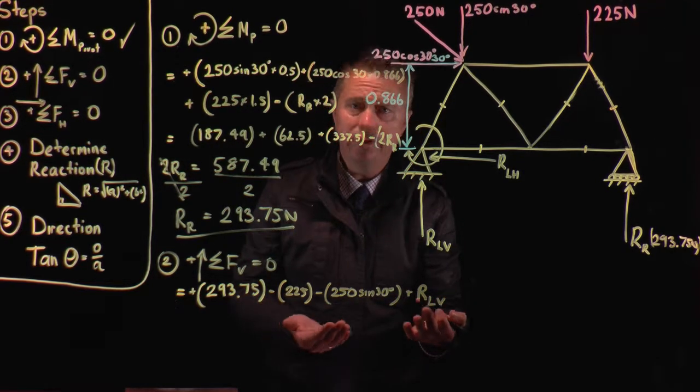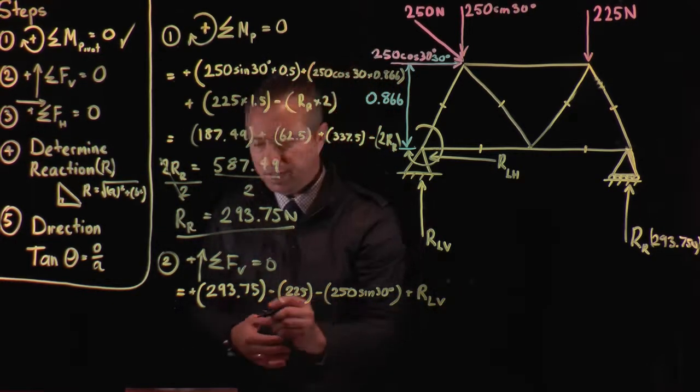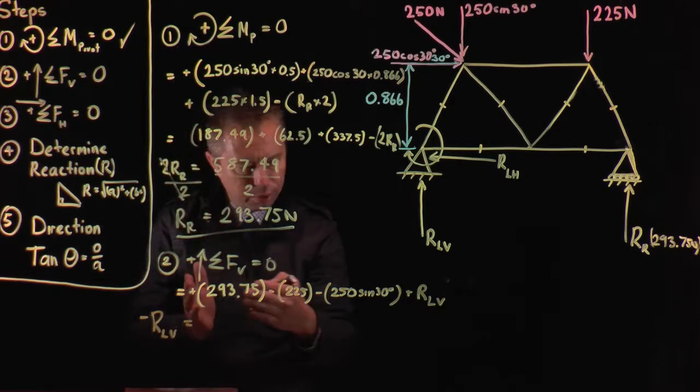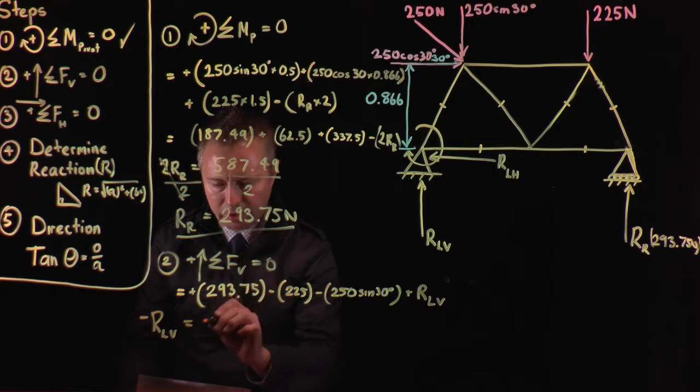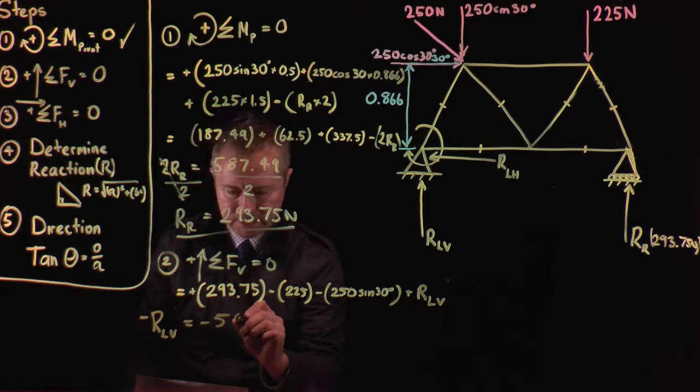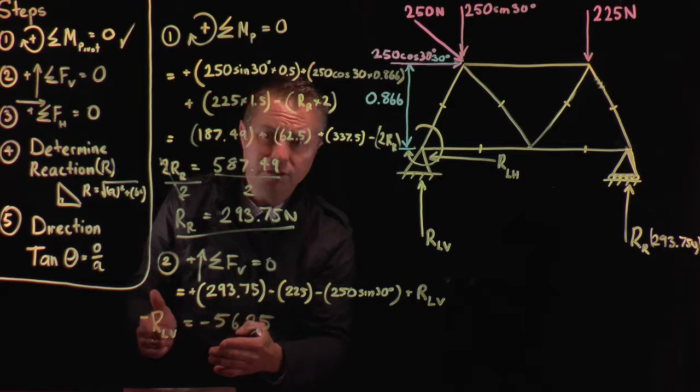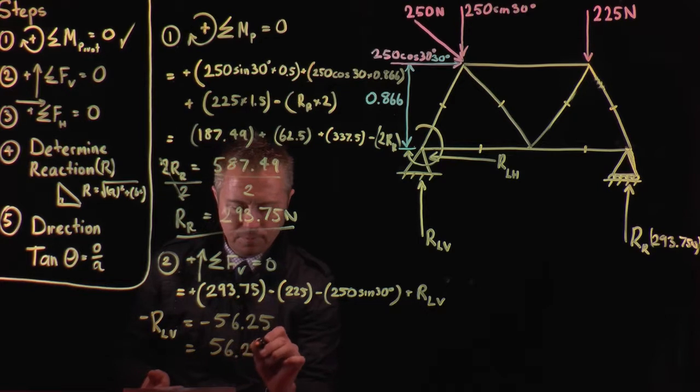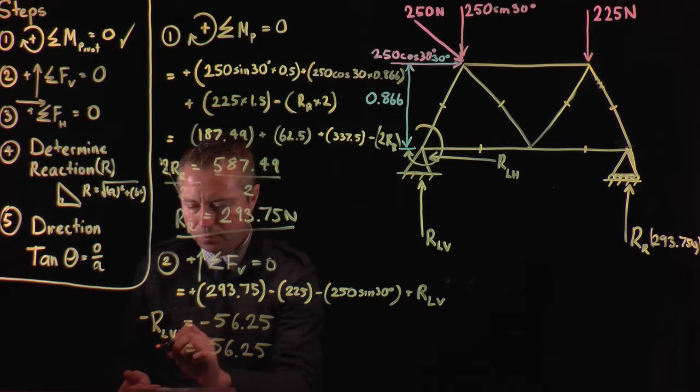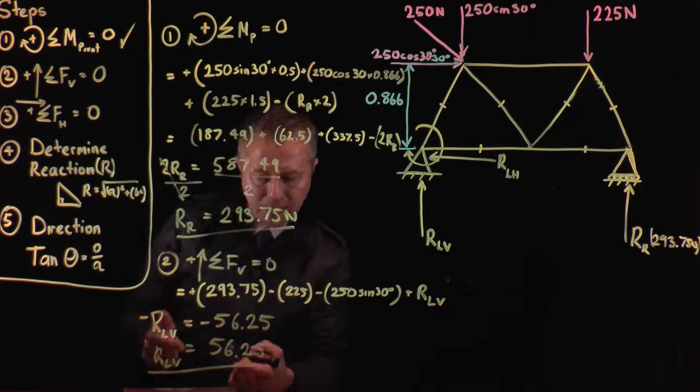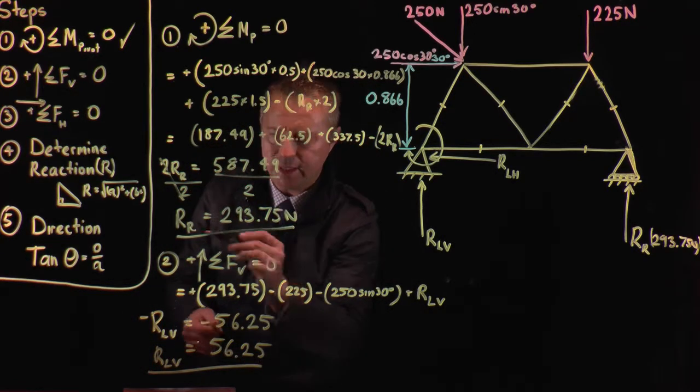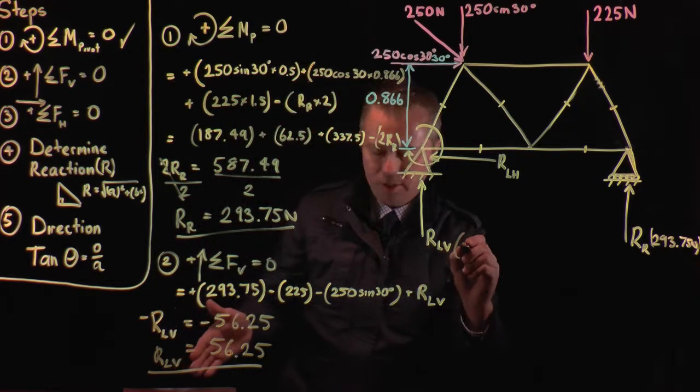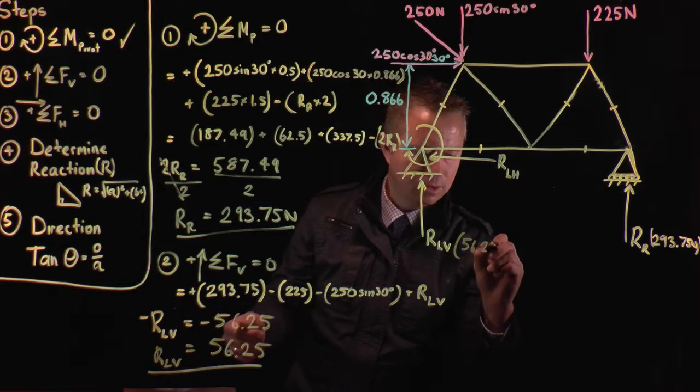And then we come over here and we've got plus reaction LV. You can see that's our unknown. That's what we're working towards solving. So we'll move this over here and we'll have minus reaction LV equals, put all these numbers together. And you'll get negative 56.25. And as you know, we've got two negatives divided by negative 1 and that becomes positive. So therefore, reaction LV, and I always like to underline a sub-answer, equals 56.25.